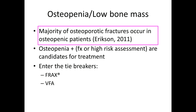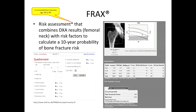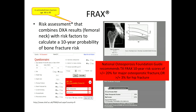To stratify those osteopenic patients at greatest risk, two useful tools are FRAX and VFA. FRAX is a risk assessment tool that combines femoral neck DEXA results with risk factors to calculate a 10-year probability of bone fracture risk in untreated men and women between ages 40 and 90. The National Osteoporosis Foundation recommends treatment when the FRAX 10-year fracture risk is greater than 20% for major osteoporotic fracture or greater than 3% for hip fracture.